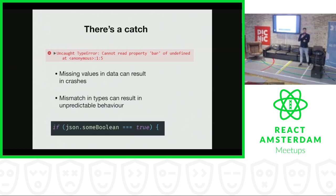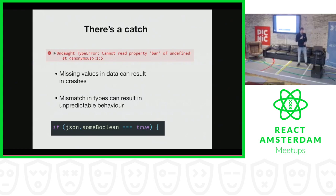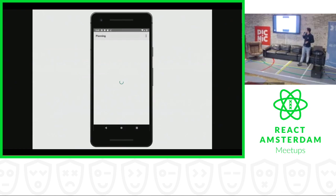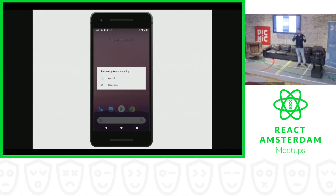Something else that can happen is that the type you get from the backend is actually different than you expect. So let's say you expect the backend to send you a boolean, but in fact it's sending you a one or a zero. Then a check like this will not work. And this is what happens if you don't catch this error — you'll be thrown out of your app and you'll see this ugly dialog. And people that download your app will probably remove it and never install it again.